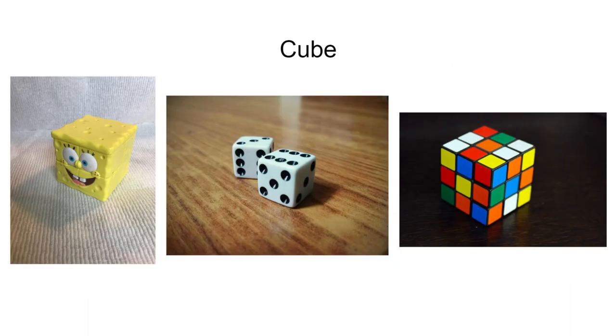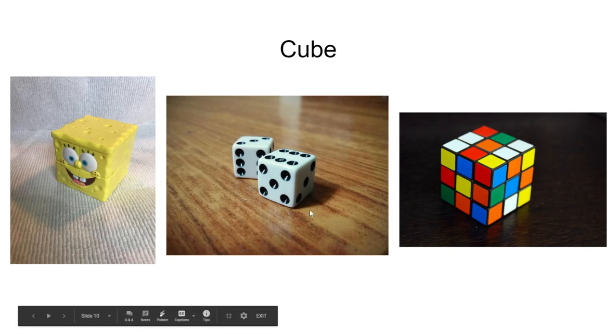So our first 3D shape is a cube. Remember it looks like a square but then it pops up and it's called a cube. Miss Lena found a Spongebob cube at her house and then that middle picture are some dice for playing a game.